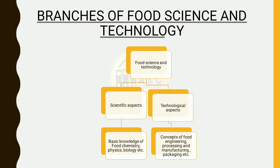In food science and technology, two different aspects are recognized. Scientific aspects which provide basic knowledge of food chemistry, physics and biology; and technological aspects which provide knowledge of engineering, processing, manufacturing, packaging etc. These two scientific and technological aspects are needed by every food industry to convert its food into different food products.